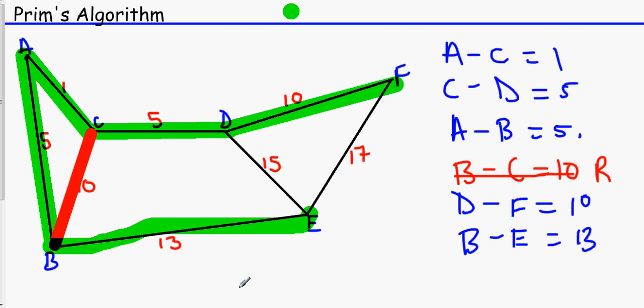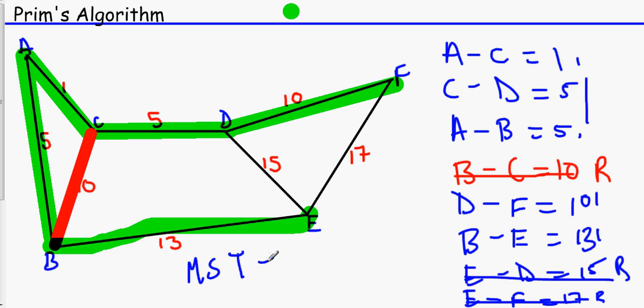But again, Edexcel students and anyone else who likes doing extra work, all you need to do is do E to D. E to D, 15 reject. And E to F, 17 reject. E to F, 17 reject. Now, if we add it all up again. So that was 10, 20, 21, 34. Our MST is 34.